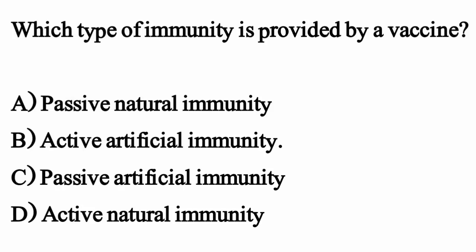Which type of immunity is provided by a vaccine? The correct option is Option B, active artificial immunity.